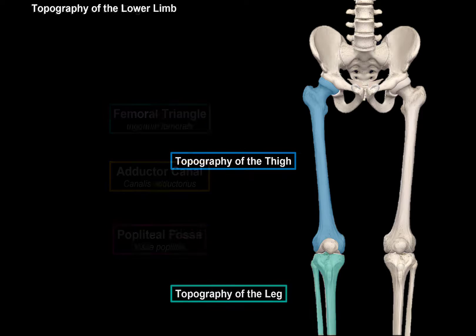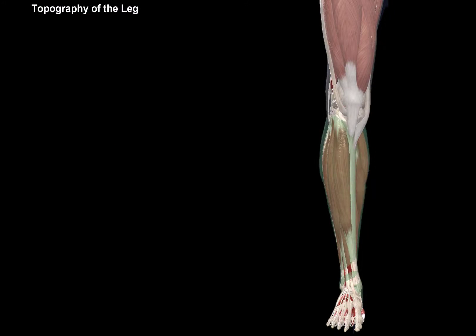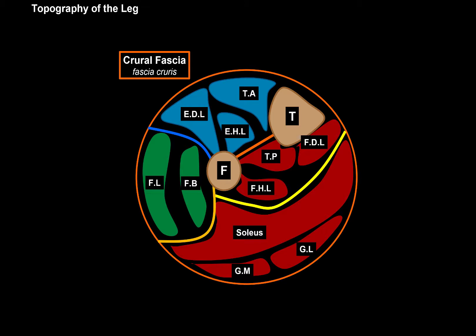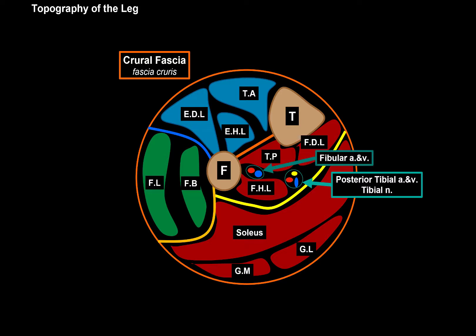So that was the topography of the thigh. Now let's quickly do the topography of the leg. Here we have the leg with the crural fascia around it. Let's make a cross-section of the leg and look at it from this perspective. On the posterior side there is a canal lying deep for the posterior tibial artery and vein, as well as for the tibial nerve. There's also a canal for the fibular artery and fibular vein. Within the anterior compartment, there's a small canal for the anterior tibial vein and artery, as well as for the deep fibular nerve.